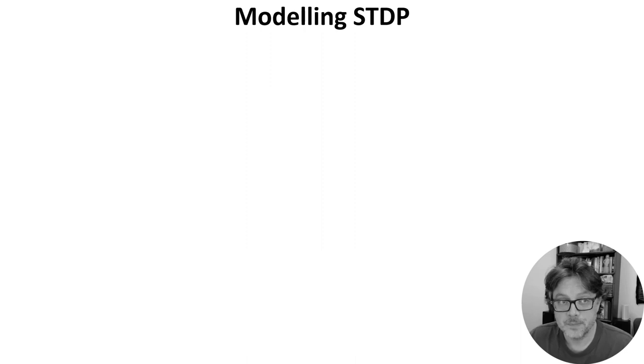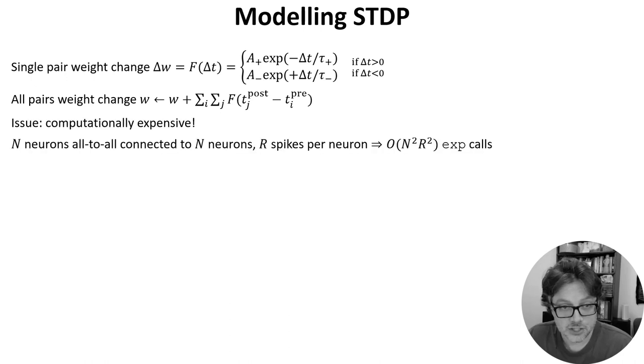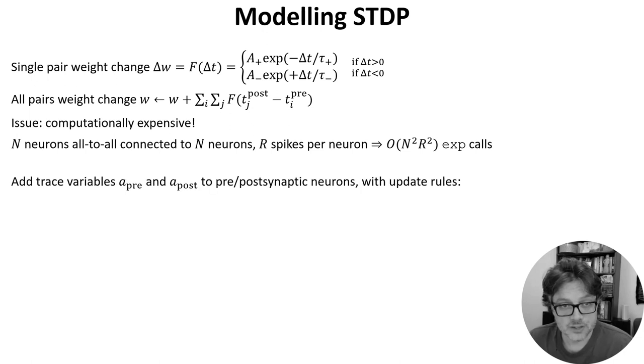So how do we model this? Well, the simplest thing would be just to sum the weight change over all of the spike pairs. The issue is that this is computationally expensive. Suppose we have N neurons, all to all connected to N other neurons, and each neuron fires around R spikes. In that case, computing this sum takes around N squared R squared operations, and each operation contains a call to the exponential function, which is itself very heavy.